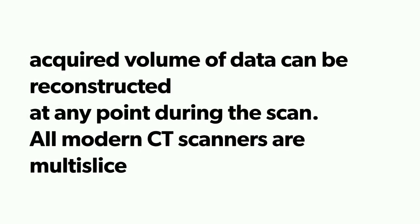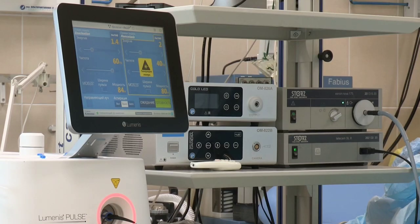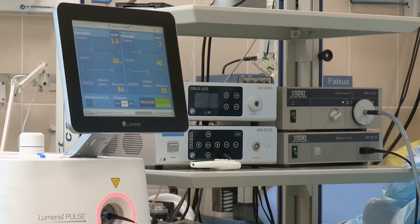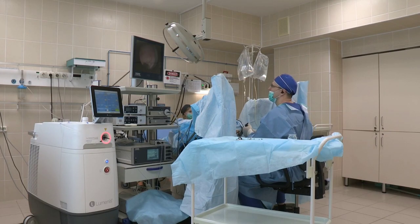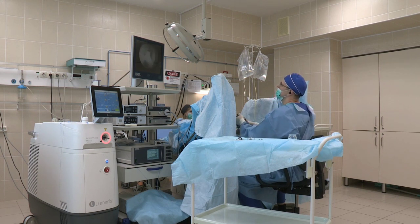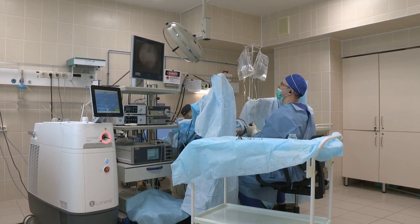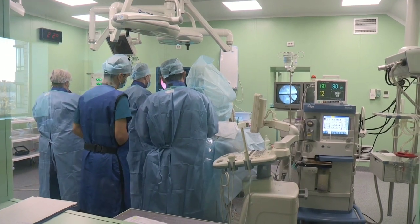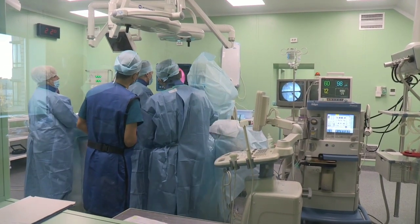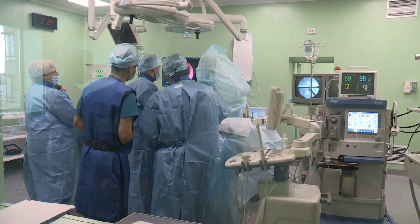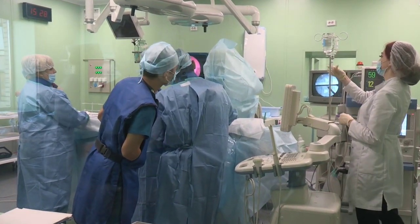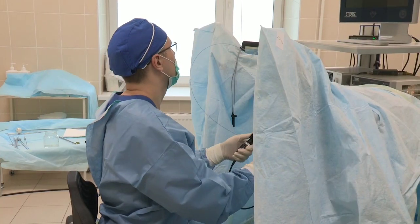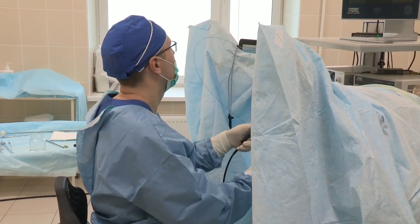All modern CT scanners are multi-slice. Inside the gantry, an x-ray tube projects a fan-shaped x-ray beam through the patient to the detector array. As the x-ray tube and detector rotate, x-rays are detected and the computer mathematically reconstructs the data. During a CT scan, the table moves the patient into the gantry, the x-ray tube rotates around them, and as x-rays pass through the patient to the detectors, the computer acquires and processes the data to form an image.